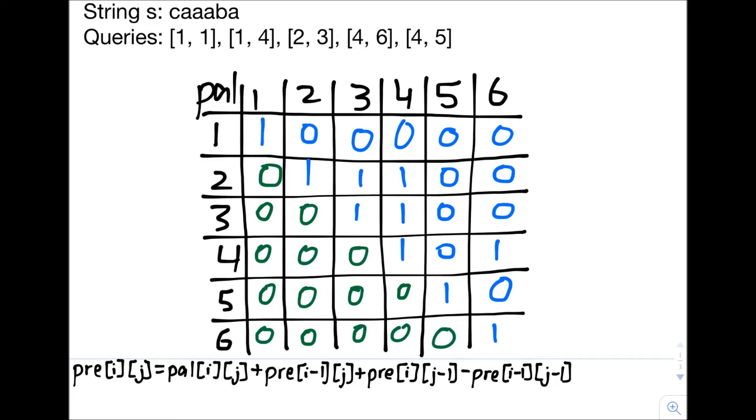One thing to note is that if we're trying to find pre of 1,4, we have to be able to add pre of i-1,j and pre of i-1,j-1. Because of this, it's optimal to use 1-based indexing. Because if we use 0-based indexing, then pre of i-1 is pre of negative 1,j, which doesn't exist. If we use 1-based indexing, then pre of 1-1 is pre of 0,j, which does exist.